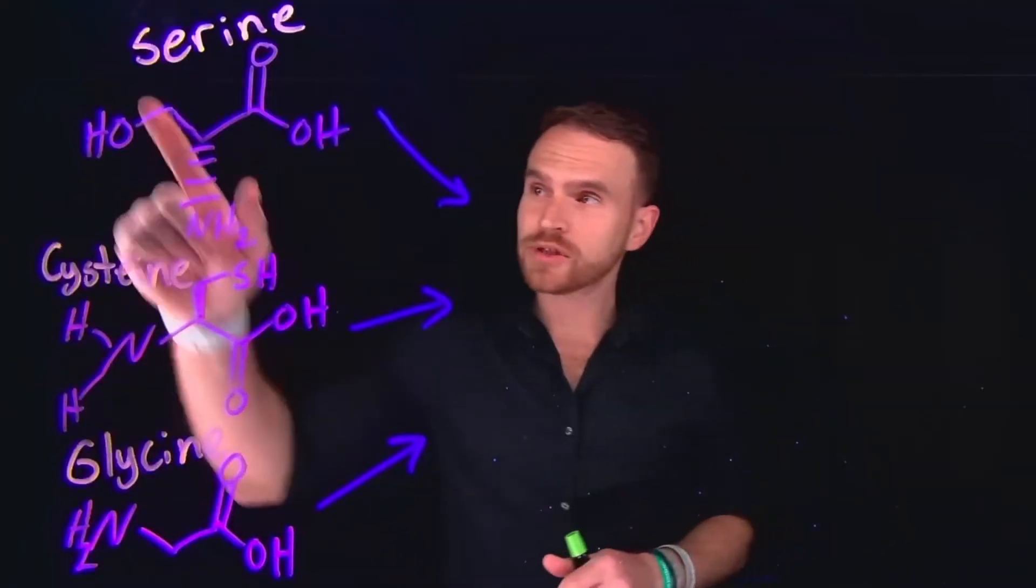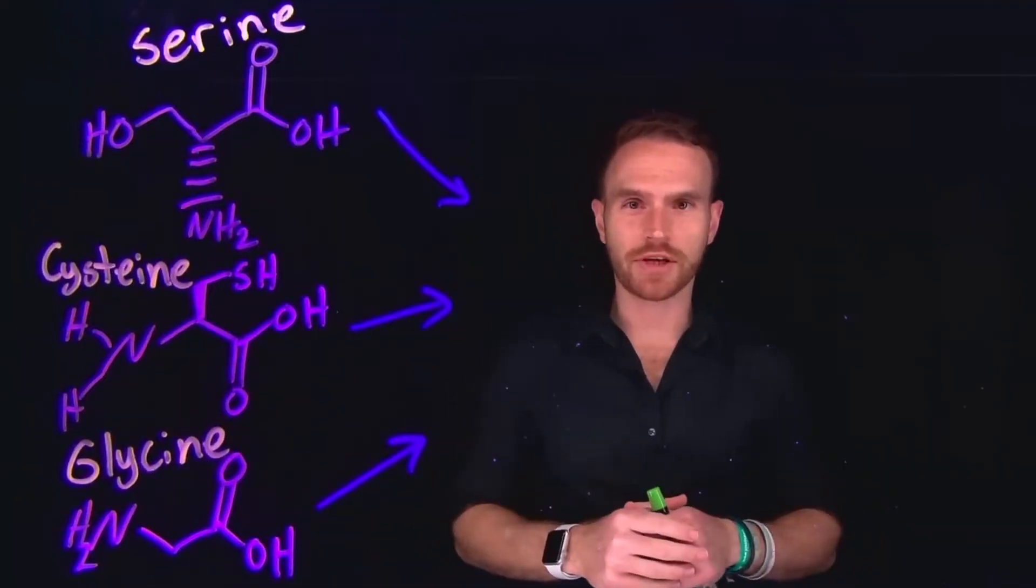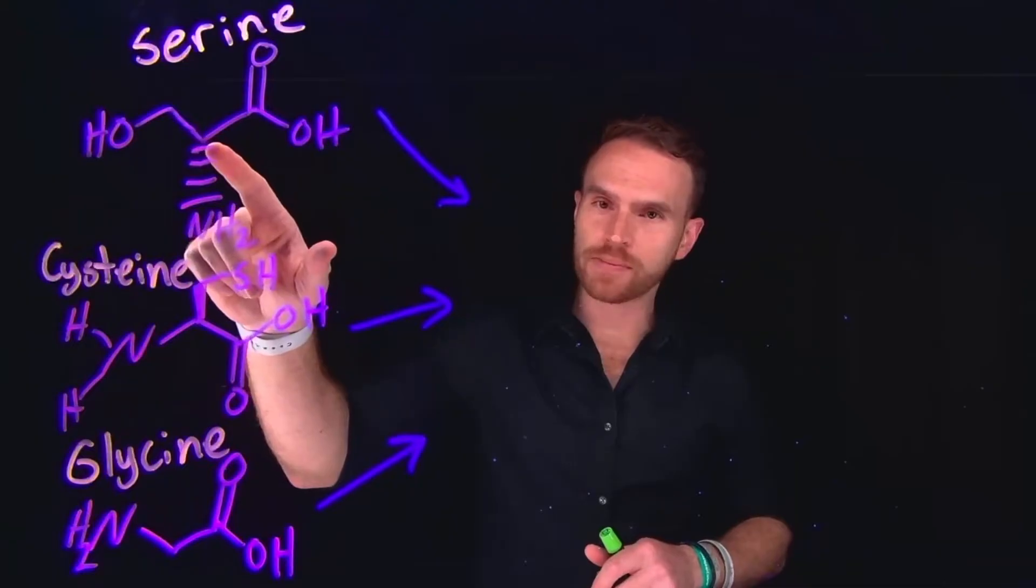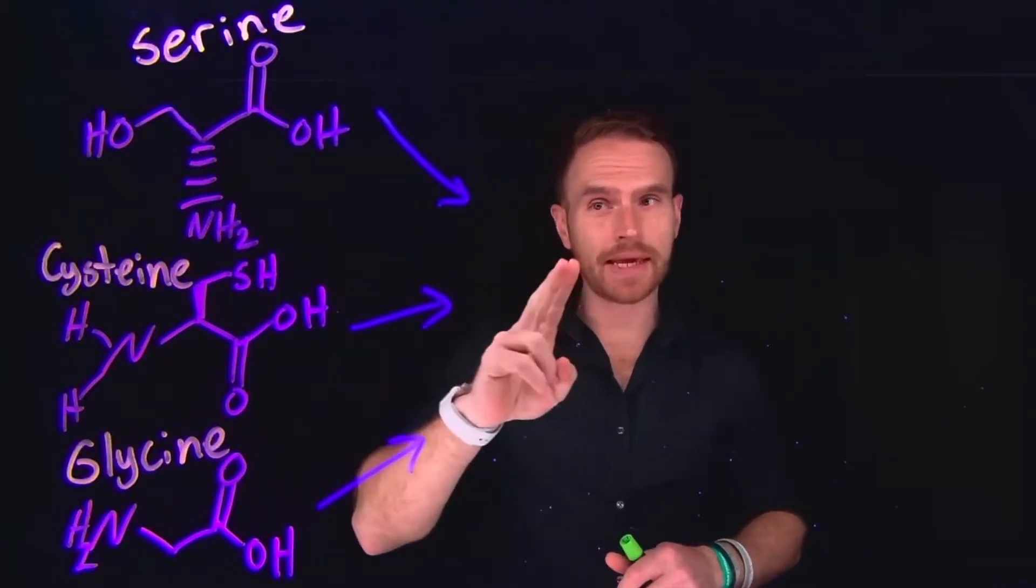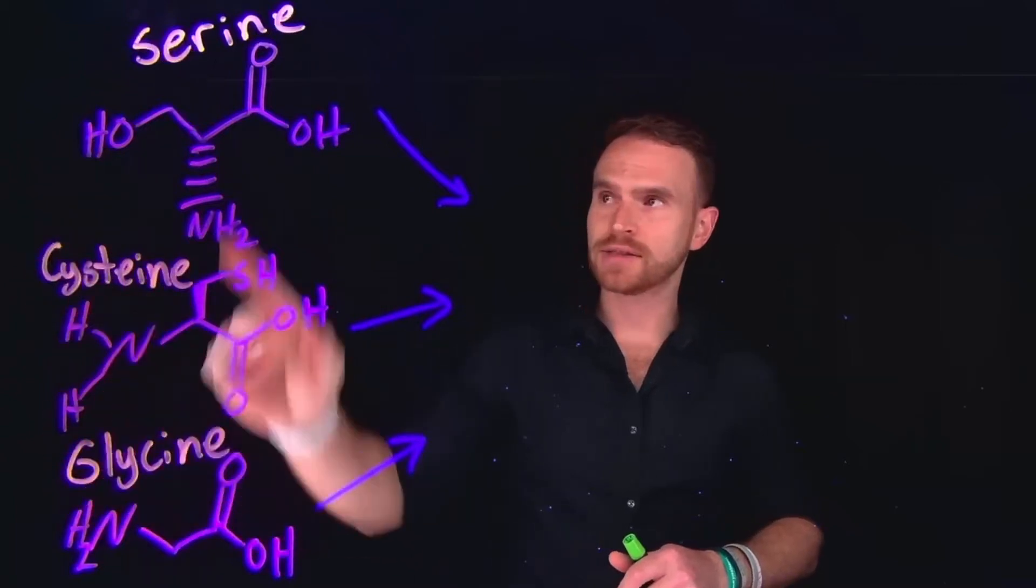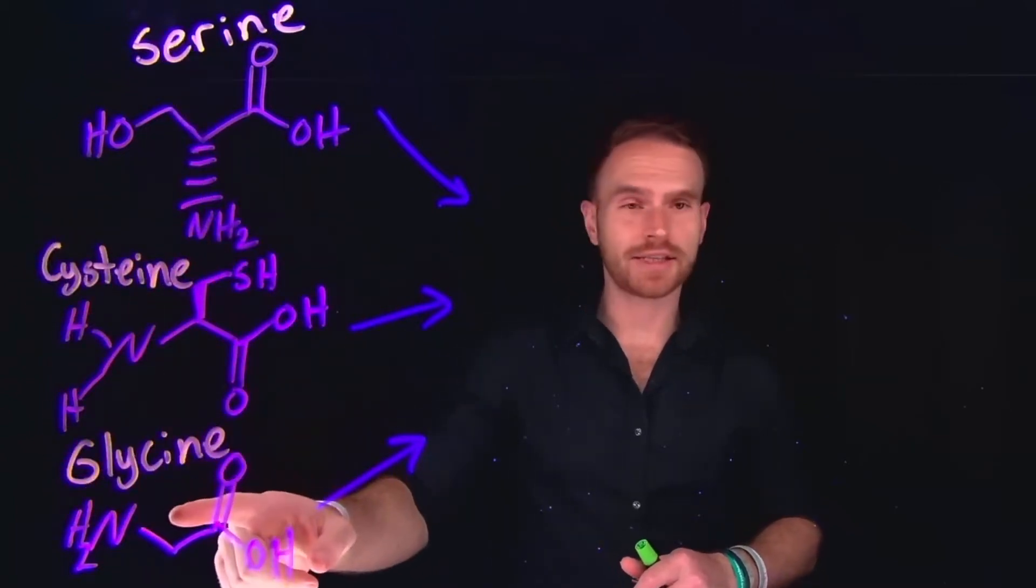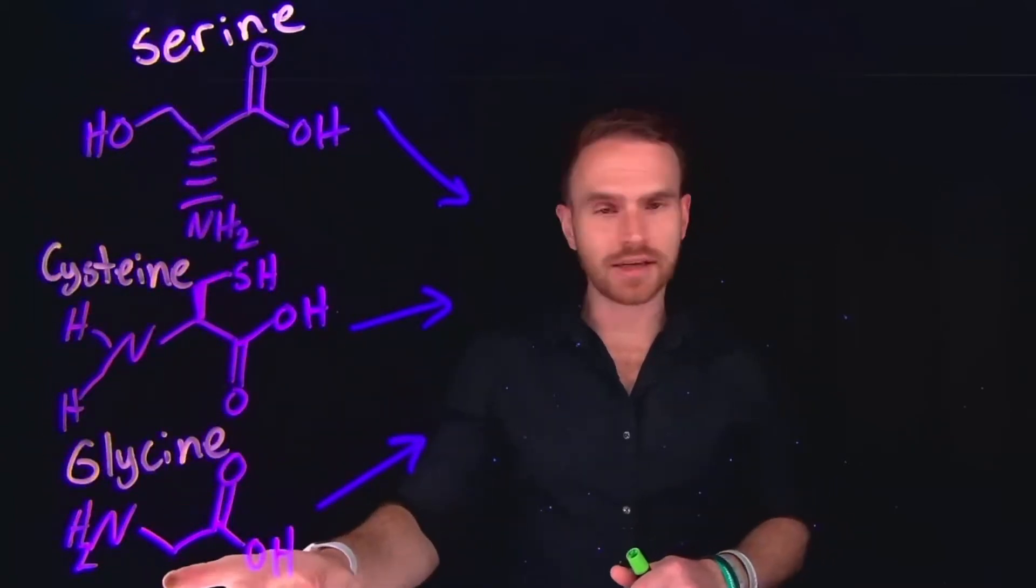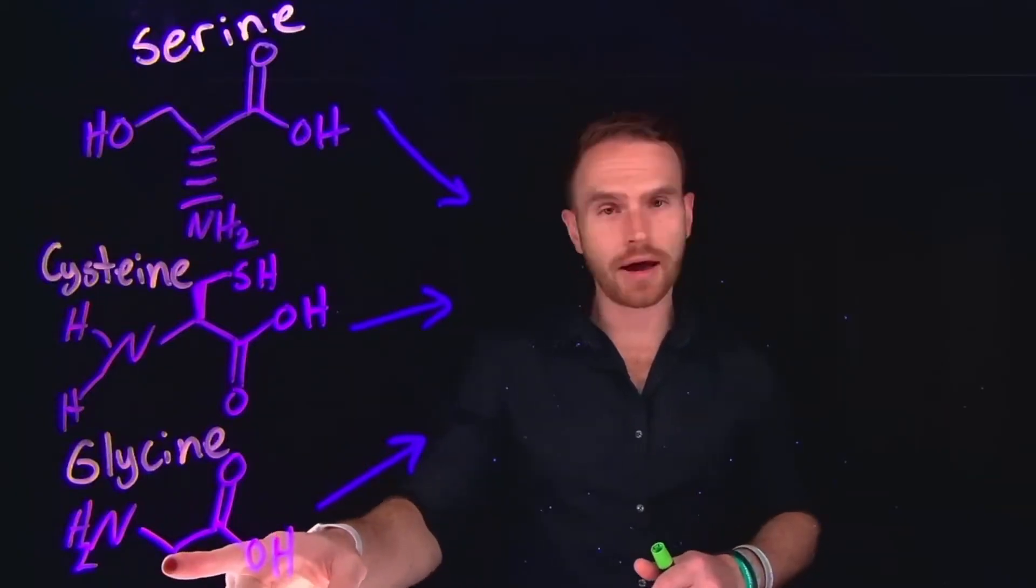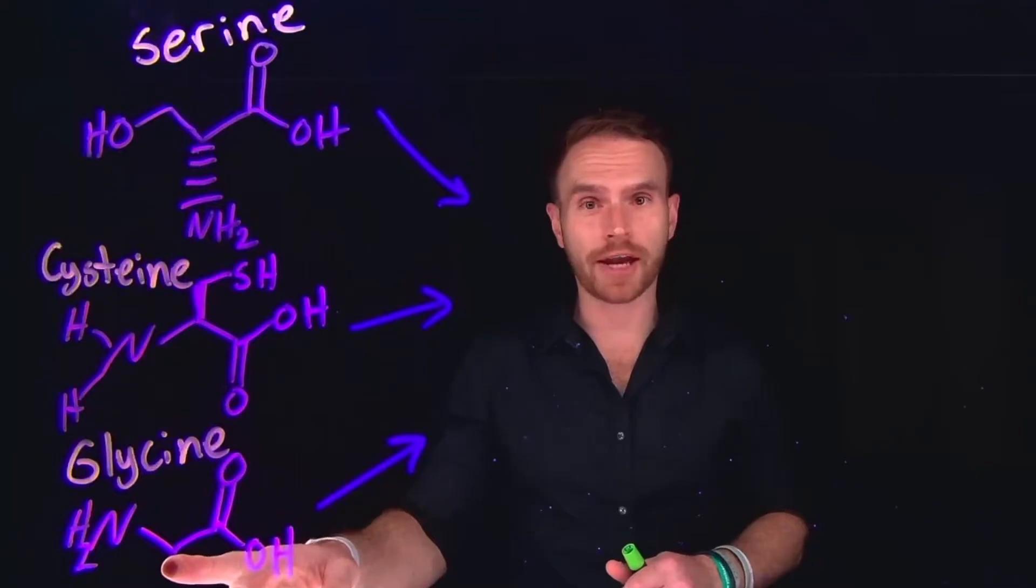Peptides are composed of amino acids, which we have reviewed in a previous video. Specifically, there is a carboxylic acid, and at the alpha carbon position is a hydrogen, an amine, and an R group side chain. Listed are three different amino acids: serine, cysteine, and glycine. Notice that glycine doesn't have a chiral alpha carbon, and this is because both the other substituents on the carbon atom are hydrogen atoms.